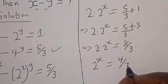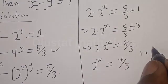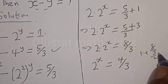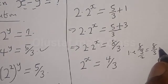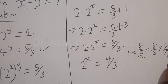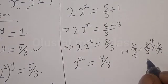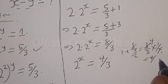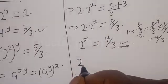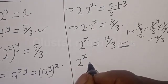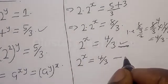We get 4 divided by 3. Note: 8 divided by 3, divided by 2, equals 8 divided by 3 multiplied by 1 over 2. The 2s cancel, giving 4 divided by 3. So 2 raised to the power x equals 4 divided by 3. Let's call this the equation star.